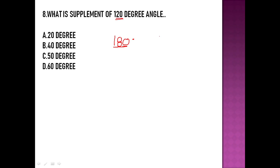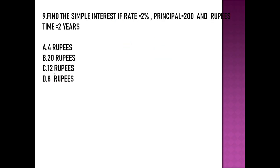The total measure of a supplementary angle is 180 degrees. The given measure is 120 degrees. We subtract: 180 minus 120 degrees equals 60 degrees. So 60 degrees is the supplement of a 120-degree angle, and option D is correct.